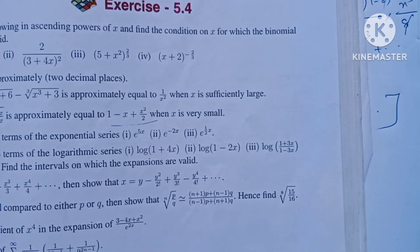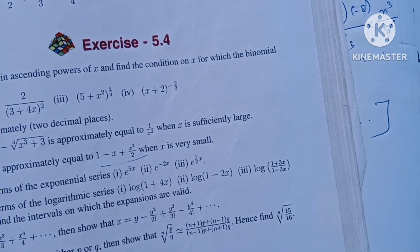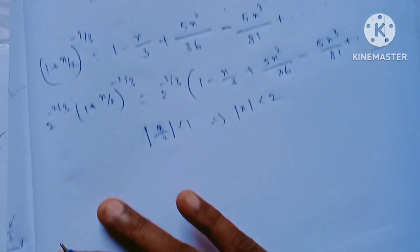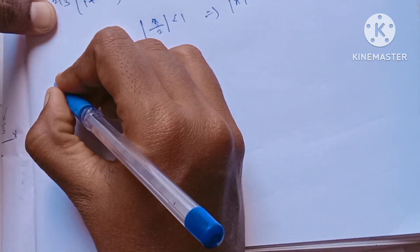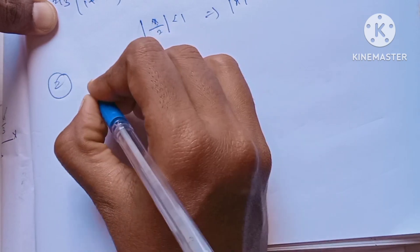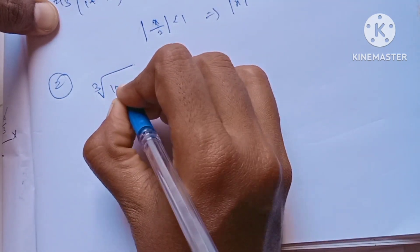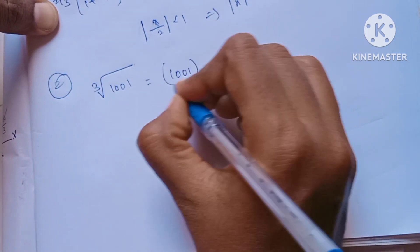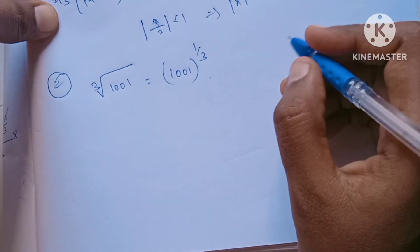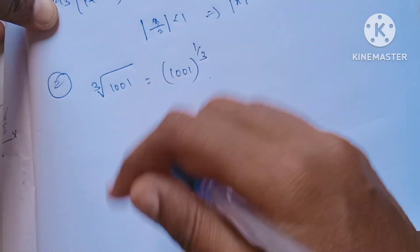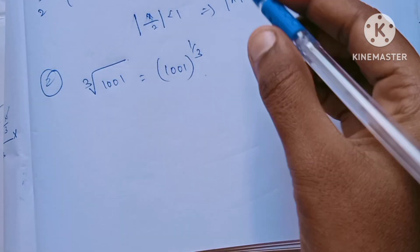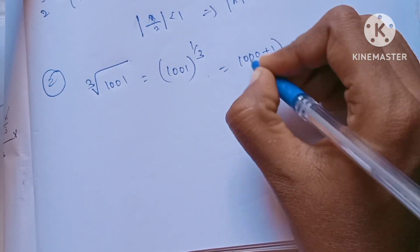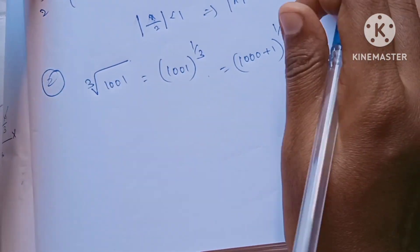So, what do we do now? We will find the value to two decimal places. Cube root of 1001 — that is 1000 whole power 1 by 3. We rewrite it as 1000 and 1001, that is (1000 + 1) whole power 1 by 3.